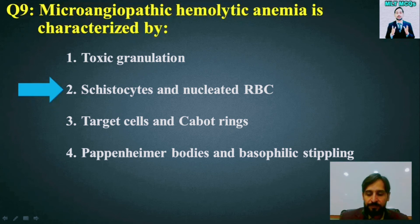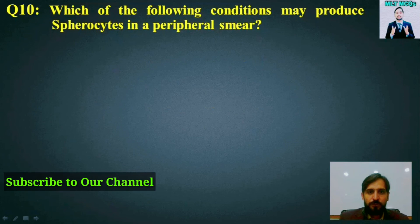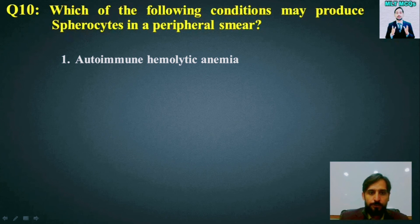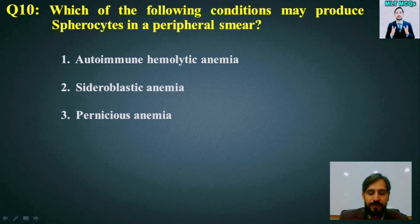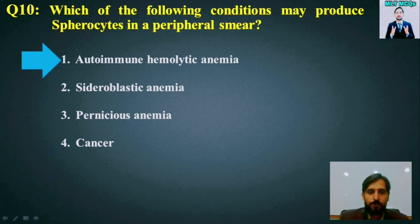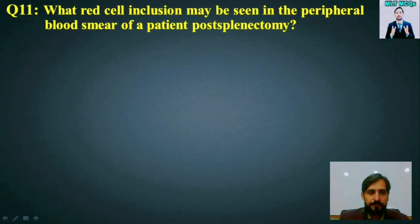MCQ number 10: Which of the following conditions may produce spherocytes in a peripheral smear? Options are: autoimmune hemolytic anemia, sideroblastic anemia, pernicious anemia, or cancer. The right answer is option number 1 — autoimmune hemolytic anemia.